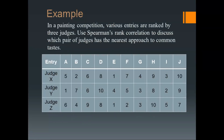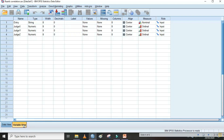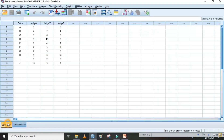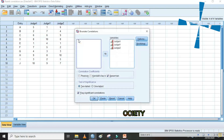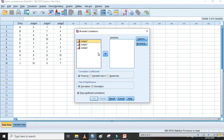For this, I have taken an example in which there is a painting competition where three different judges have assigned rankings. Using Spearman's rank correlation coefficient, we need to find out which pair of judges has a strong positive association — that is, which pair of judges has the nearest approach to common taste. Now let's go to SPSS, do data entry, and run rank correlation on SPSS.